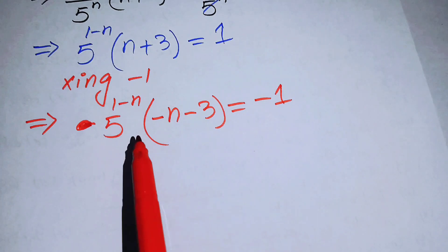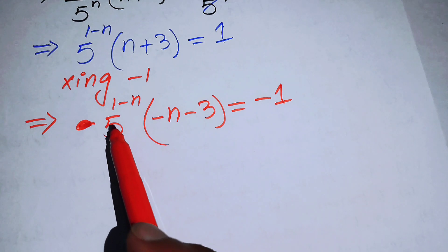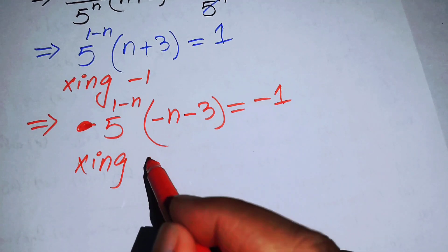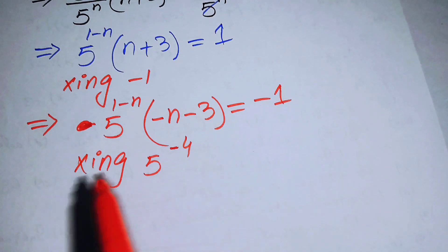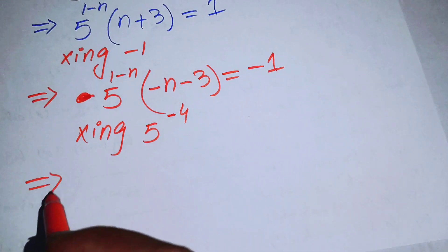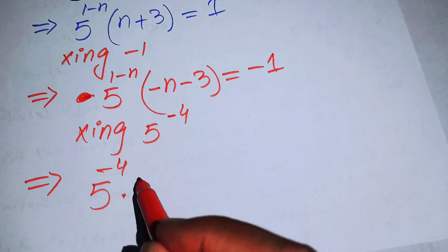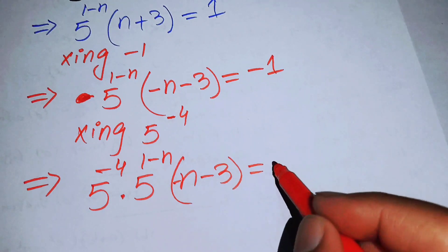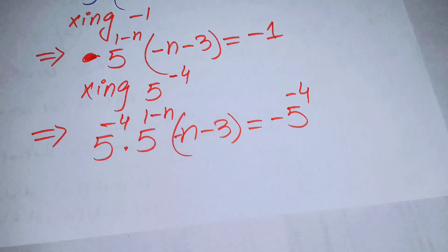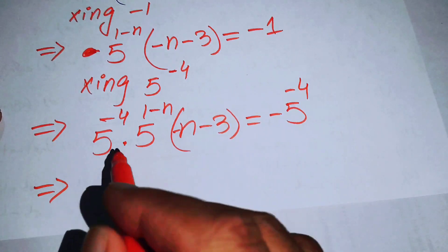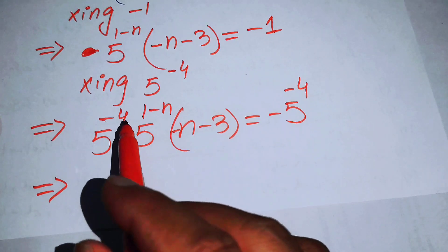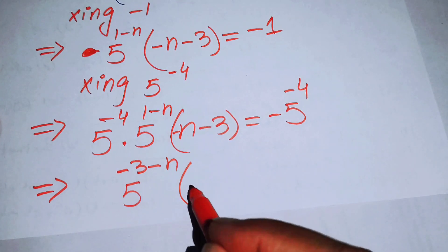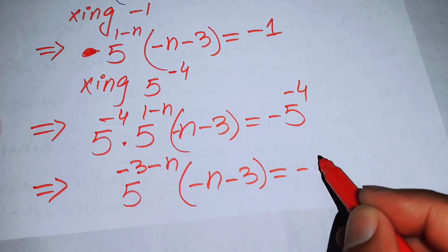Next, we put minus n minus 3 into the exponent of 5, and multiply both sides by 5 to the power of minus 4. Using the exponent addition law, minus 4 plus 1 equals minus 3, giving us 5 to the power of minus 3 minus n times minus n minus 3 equals minus 5 to the power of minus 4.